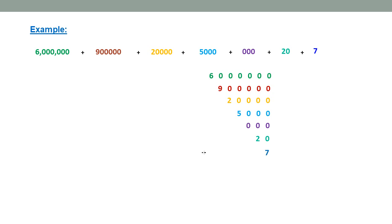You can add up the numbers in columns: 7 in ones column, 2 in tens column, 0 in hundreds column, 5 in thousands column, 2 in 10,000 column, 9 in 100,000 column, 6 in million column. So, we are actually adding up the numbers to get the standard form of an expanded form.